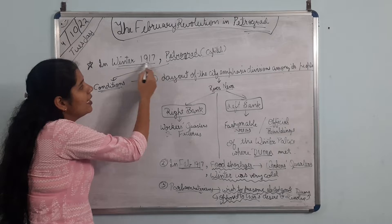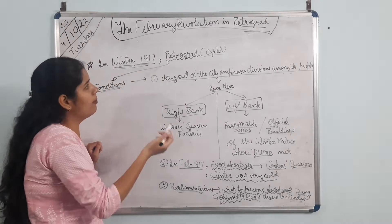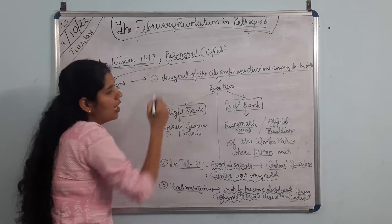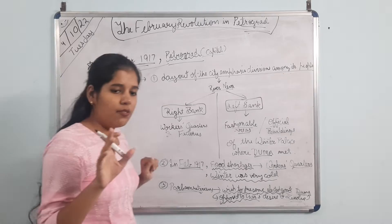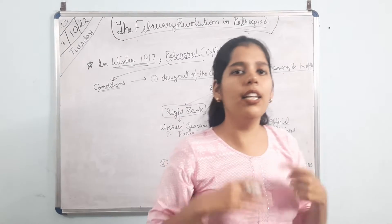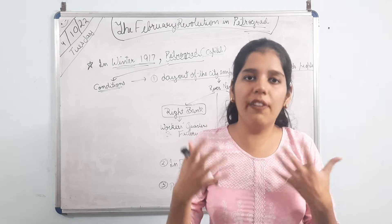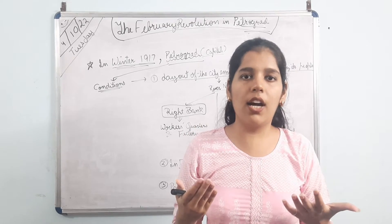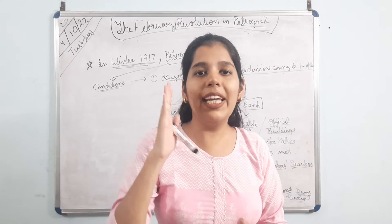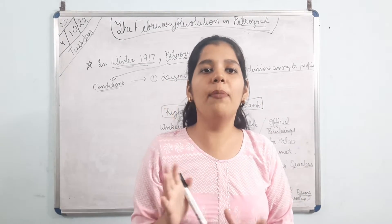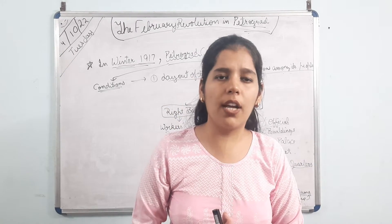In the winter of 1917, Petrograd was the capital of Russia. We are talking about a revolution happening inside Russia. That revolution is happening to remove a king whose name is Czar Nicholas II. Initially when the revolution starts, it is not immediately in anyone's mind that we have to remove the monarchy or remove the king.